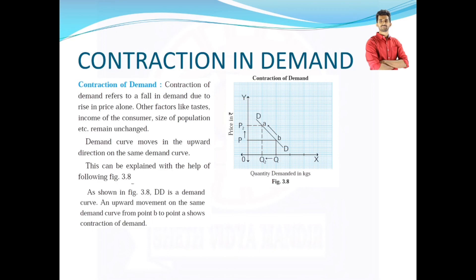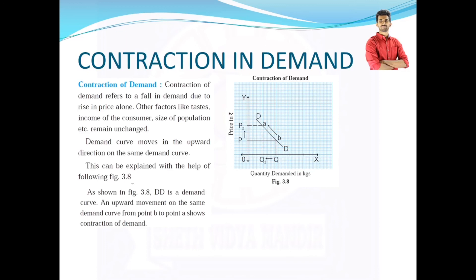X-axis denotes quantity demanded in kgs whereas y-axis denotes price of the commodity in rupees. So here we can clearly understand that when price rises from P to P2, quantity demanded reduces from Q to Q2. DD is a demand curve and upward movement on the same demand curve from point B to point A shows contraction of demand. So in this way, we understood today variations in demand, namely expansion of demand and contraction of demand.